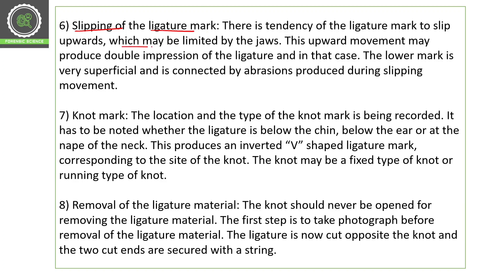The sixth factor is slipping of the ligature mark. There is a tendency for the ligature mark to slip upward, which may be limited by the jaws. This upward movement may produce a double impression on the ligature. The direction can be upward or downward — upward movement is restricted by the jaw, and this slipping may produce a double impression. The lower mark is very superficial and is connected by the abrasion produced during the slipping movement. This is known as slippage of the ligature mark.